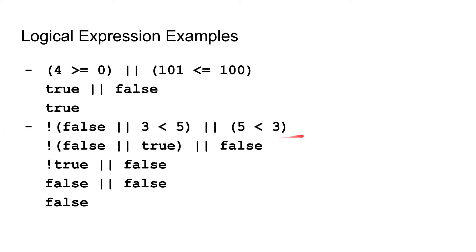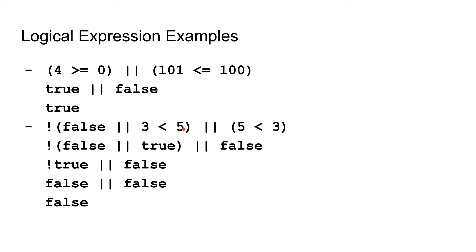Now we have this example where we are going to not what is inside of these parentheses — which is false or 3 is less than 5 — and then or that together with the set of parentheses containing 5 is less than 3. From our order of operations, we do the less-than comparisons first: 3 is less than 5 gives us true, and 5 is less than 3 gives us false.